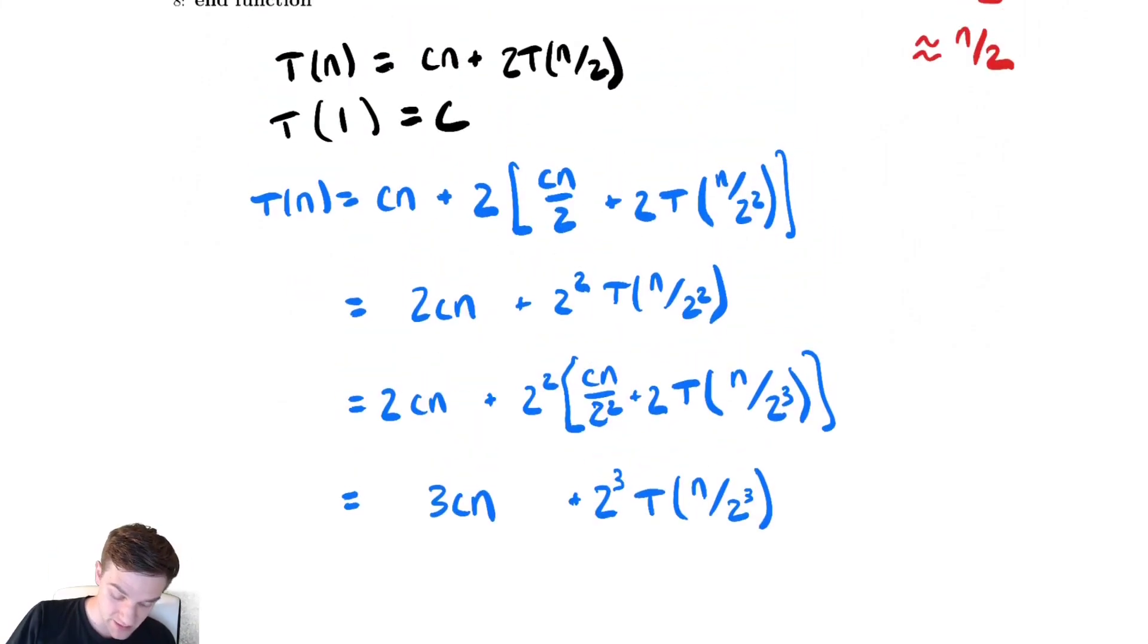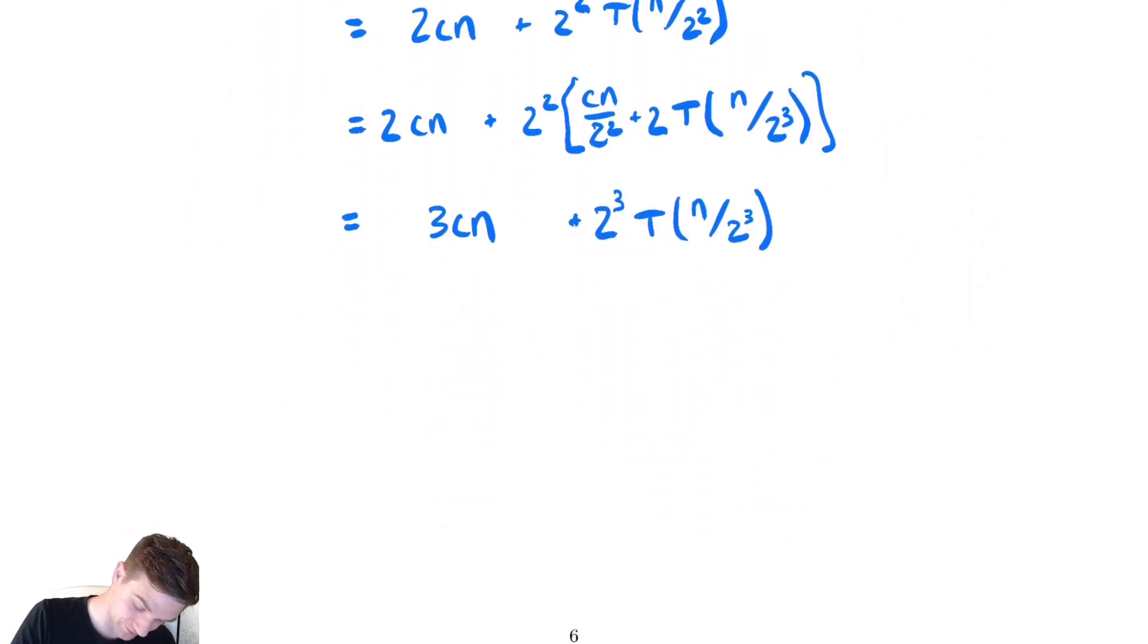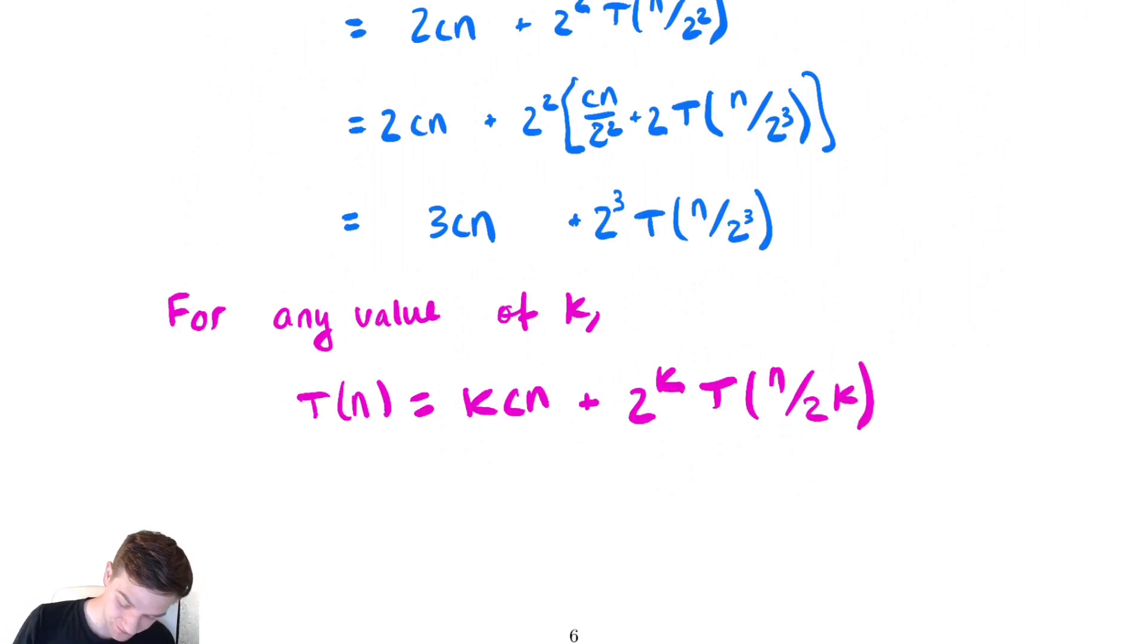Pattern looks pretty nice here. We had cn and two T(n over two). We had two cn and two squared T(n over two squared). Then three cn and two cubed T(n over two cubed). So my pattern looks like it should be for any value of k. We have that T(n) is equal to k cn plus two to the k T(n over two to the k). Now we need to use our base case to try and find out what that value of k is going to be.